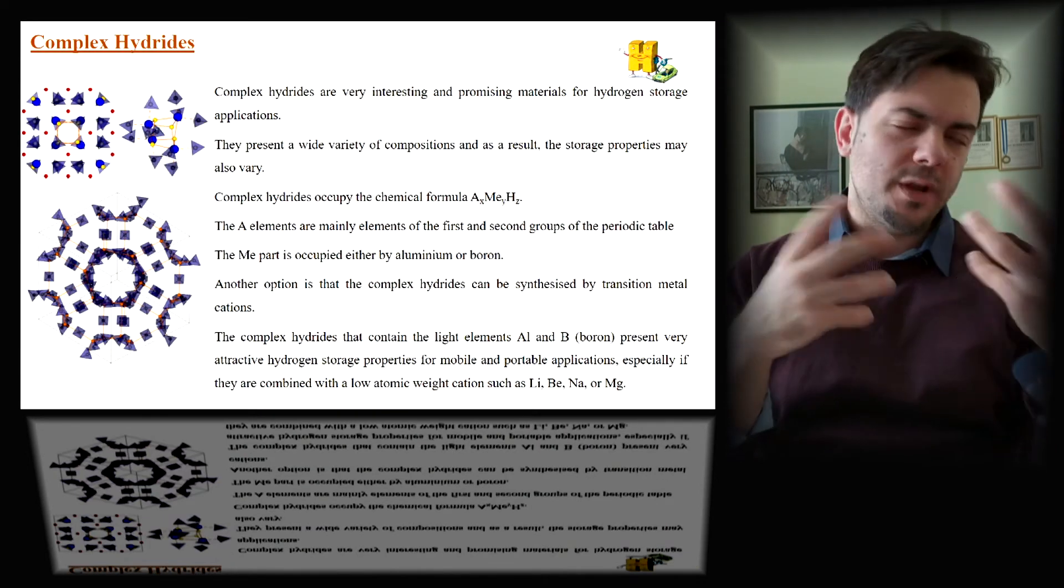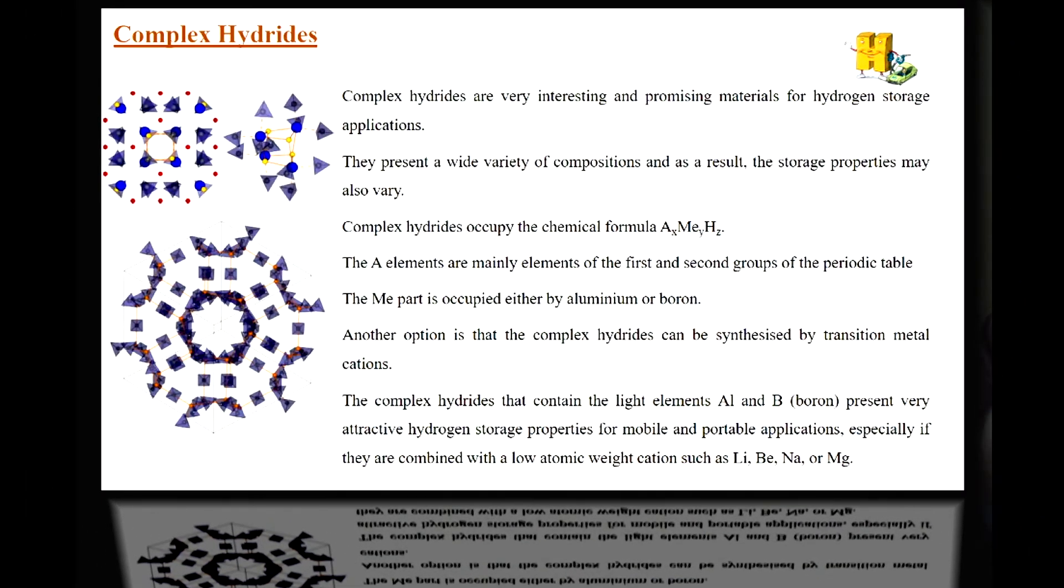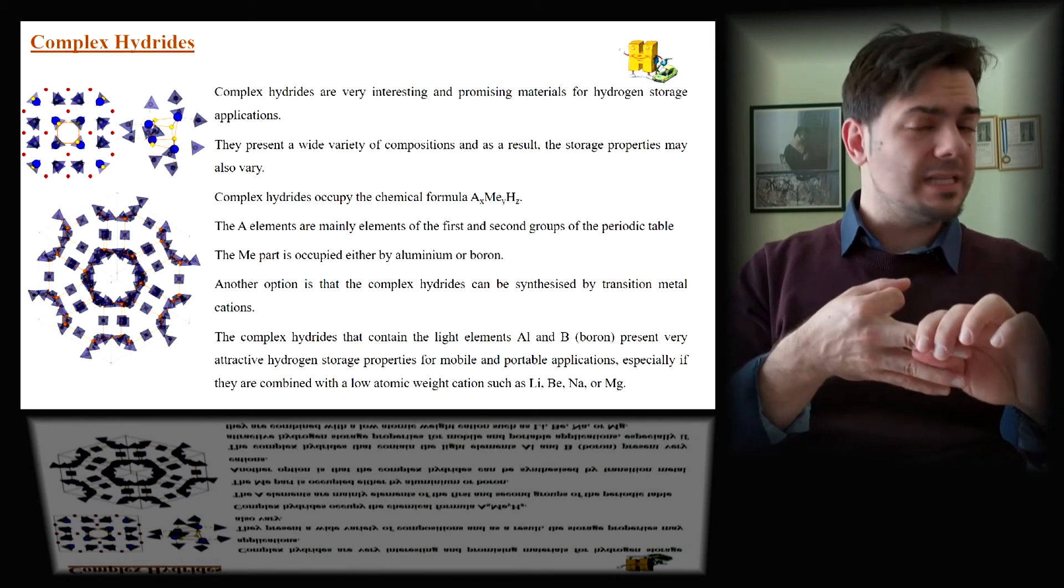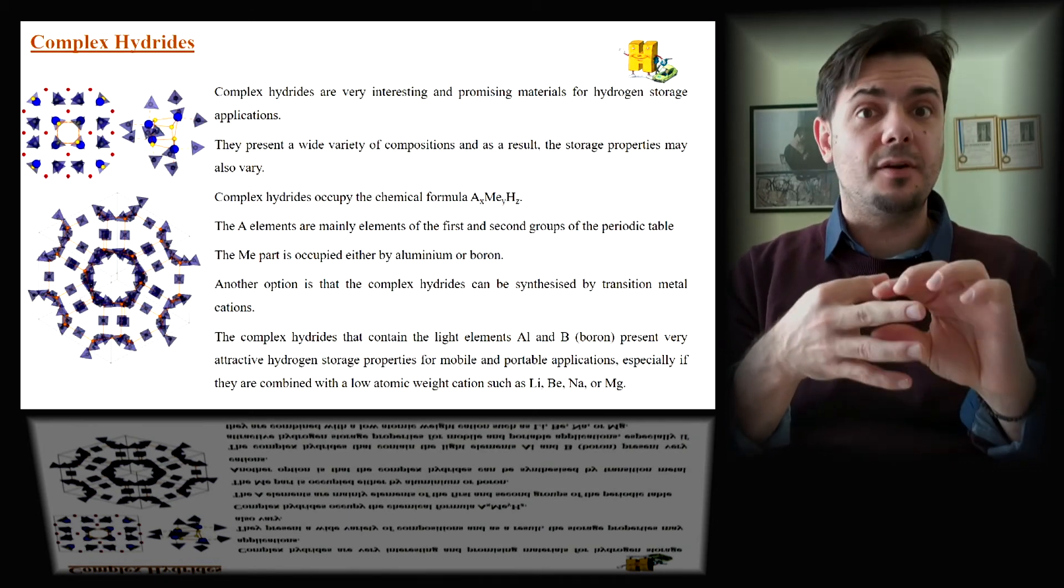Another family, a more recent family I would say, is the complex hydrides, where there are several compositions. Normally, we have the chemical formula A with index X, M, E with index Y, and H, the hydrogen with Z. Normally, the A element is the elements from the first and second groups of the periodic table, where the E part is mostly aluminum or boron. Because of the complexity of the reaction, sometimes the reaction is in two steps. We have some issues when it comes to heat management, theoretical description, and we're facing some issues with the cyclability and the repeatability as well.